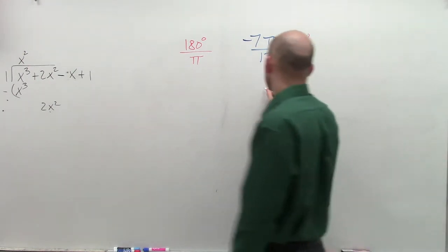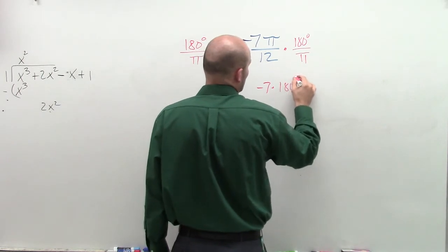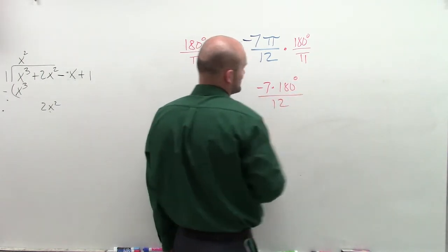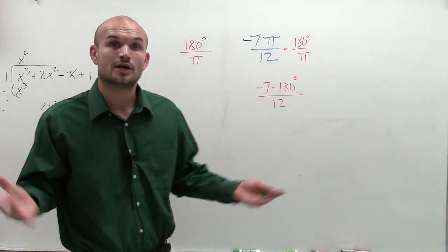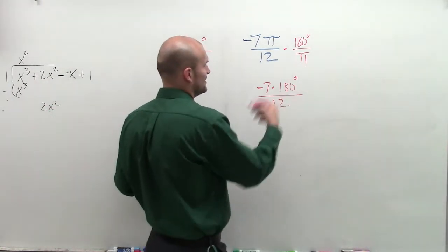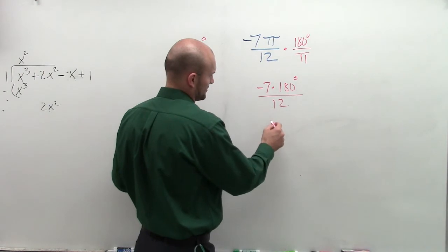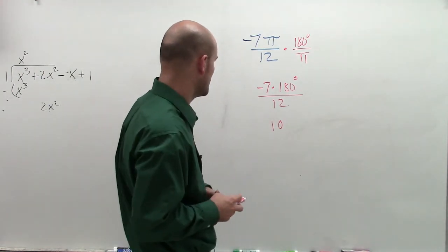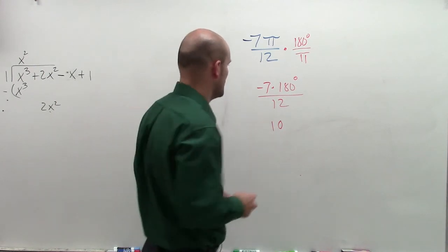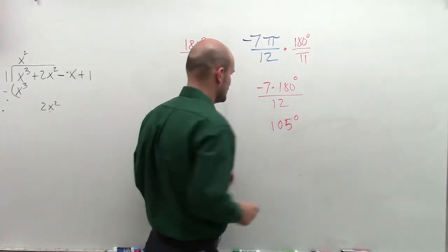So therefore, you're left with negative 7 times 180 degrees divided by 12. Now, by doing this mathematics, you'll get an answer that's in degrees. And I believe when I do this, I get 1260 divided by 12, 105 degrees.